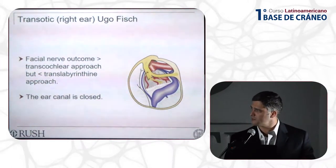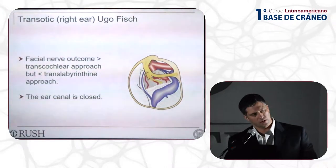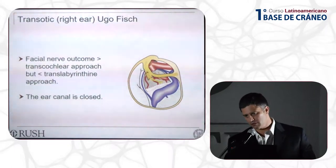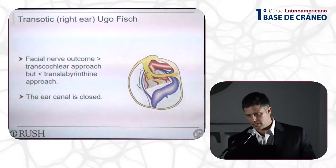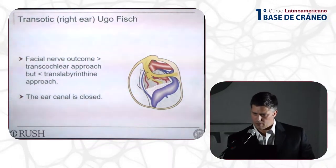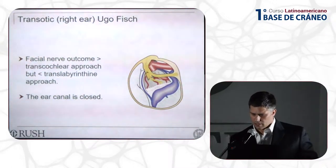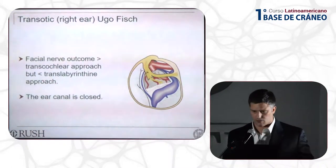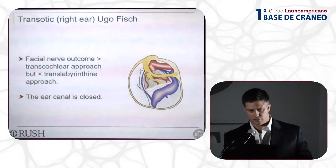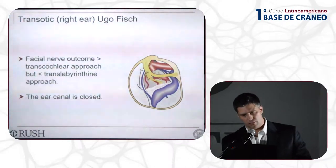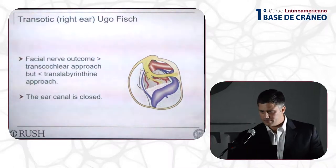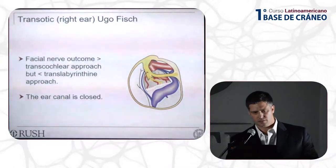Most recently, we had a patient with an intracochlear, intralabyrinthine, and internal auditory canal recurrence of a previously operated middle fossa vestibular schwannoma that we removed successfully with this approach. Other indications include when you have a high jugular bulb or an anterior sigmoid sinus and you want to go through a transtemporal route.